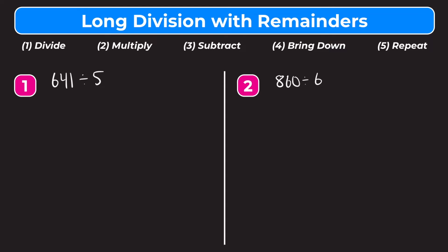Let's rewrite this as a long division problem with a division bar. We put our dividend — the number that is being divided — under the bar; that's 641. And our divisor — the number we're dividing by — outside, which is 5. So our first step is divide. We ask ourselves: how many whole groups of 5 can fit into 6? That's going to be 1, because 1 times 5 is 5.